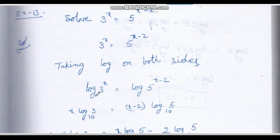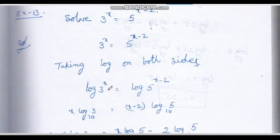Taking log on both sides: log 3 to the power x equals log 5 to the power (x minus 2). Now we apply the rule: log x to the power n equals n log x.